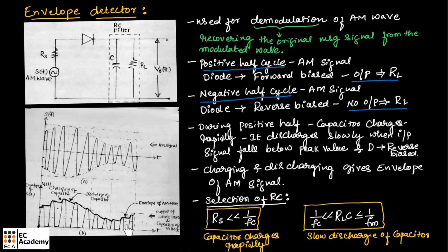This is the waveform that appears as the input to the RC filter. Across the RC filter, during the positive half of the AM wave, the capacitor will charge rapidly towards the peak value of the input, as shown here. When the input falls below the peak value, the capacitor will start discharging slowly.